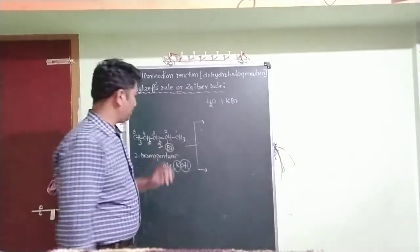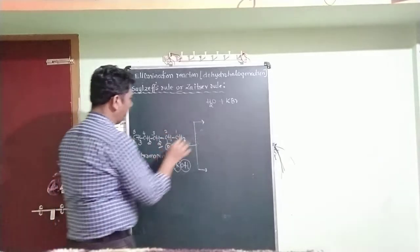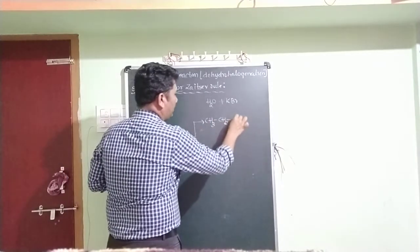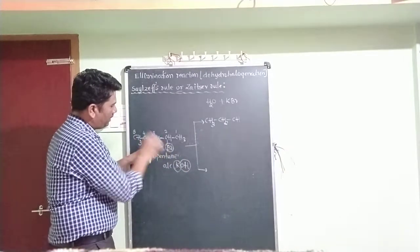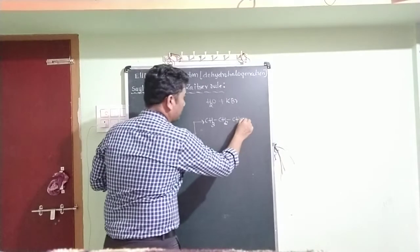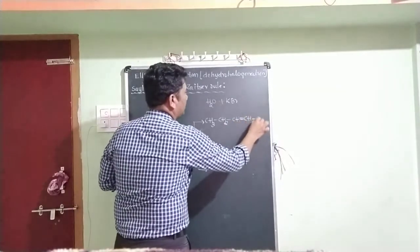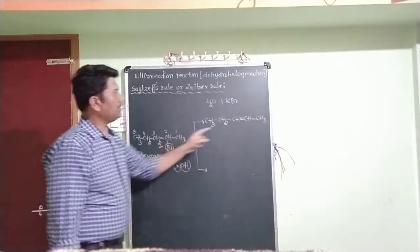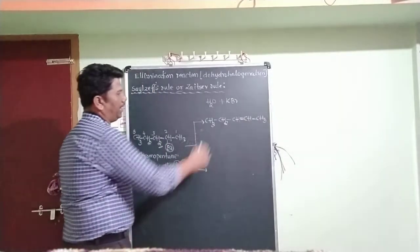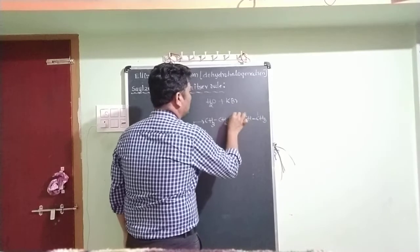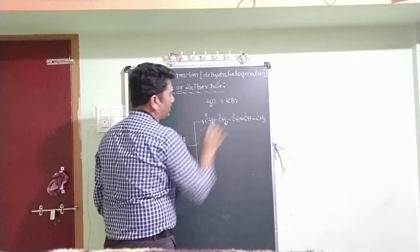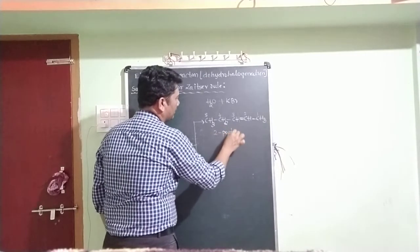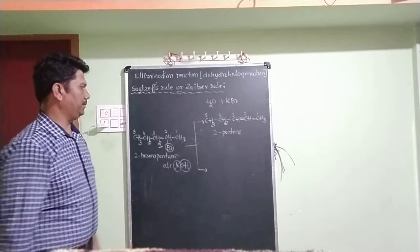After removing H and Br, the first alkene formed is CH₃CH₂CH=CHCH₃. A carbon-carbon double bond forms at the second position. With five carbons and a double bond at position 2, the name of this alkene is 2-pentene.